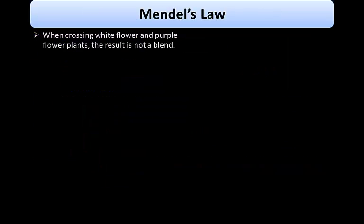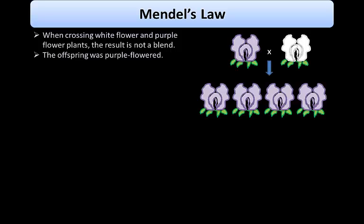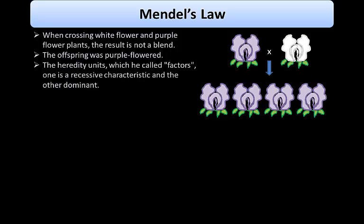Mendel discovered that when crossing white flower and purple flower plants, the result is not a blend. Rather than a mix of the two, the offspring were all purple colored. When a purple flower and a white flower were crossed, the result was not a light purple; all offspring were purple. He then conceived the idea of heredity units, which he called factors, one of which is recessive and the other dominant.